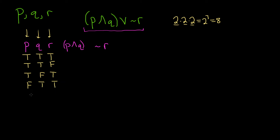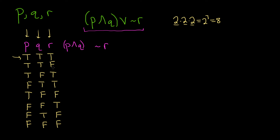Now let's look at all the possibilities where exactly two are false: true, false, false. Another possibility: false, false, true. And the last where exactly two are false: false, true, false. So we've covered none false, all three cases with exactly one false, all three with exactly two false. The last remaining case is where all three are false: false, false, false.